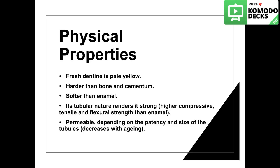Regarding the physical properties of dentine: fresh dentine is pale yellow. It's harder than bone and cementum but softer than enamel. The tubular nature of dentine renders it strong — it can withstand higher compressive forces from occlusion, as well as tensile and flexural forces, all higher than enamel. Dentine is permeable due to its tubular nature, and this permeability depends on the patency and size of the tubules. As the person ages, these tubules are occluded with dentine, so permeability decreases with age.